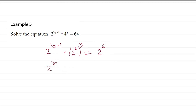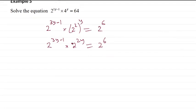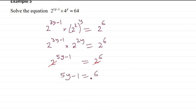So we have 2 to the power 3y minus 1 times 2 to the power 2y. Now we cancel the bases. So we have 2 to the power 5y minus 1 equal to 2 to the power 6. Now we cancel the bases again. So we get 5y minus 1 equal to 6, that means 5y equal to 7. So we divide both sides by 5, and we get y equal to 7 over 5, which can also be written as 1 and 2 over 5.